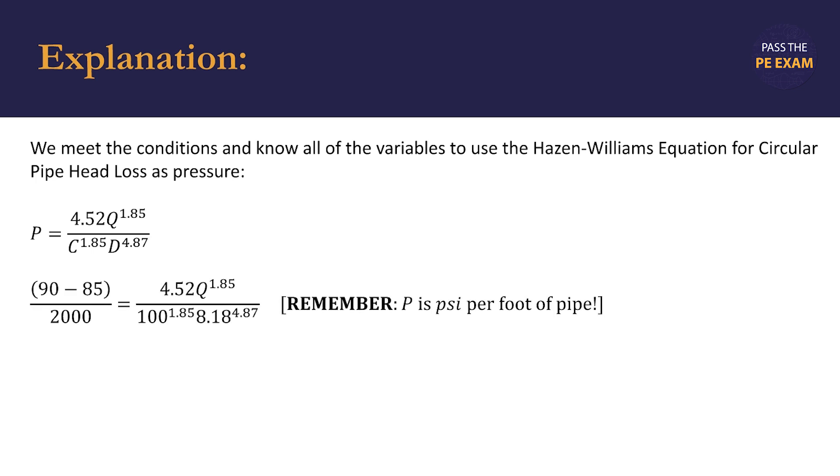Recall that p is psi per foot of pipe. To find this, we divide the difference in psi by the length of the pipe, so 5 psi divided by 2,000 feet. We also substitute in our roughness coefficient for 20-year-old cast iron pipe, 100, for c, and the diameter of the pipe, 8.18 inches.